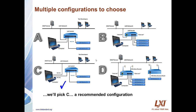With LAN, there are multiple configurations to choose. Configuration A is simply adding more LXI devices to a LAN switch, which connects everybody to the company LAN network. This gives easy access to test system developers, but also gives access to other people on the LAN, which could interfere with the test system. Configuration B is quite a bit better — a LAN router creates a firewall between the company LAN and the devices behind it in a private subnet. An extension of B is Configuration D, where a wireless router gives access to remote devices that might be in line of sight.